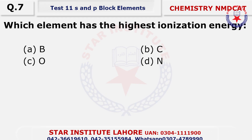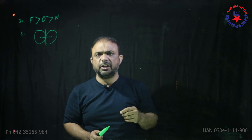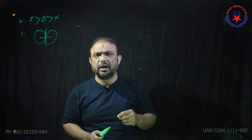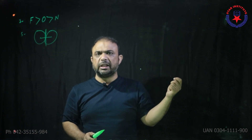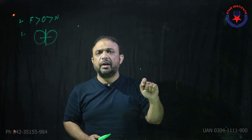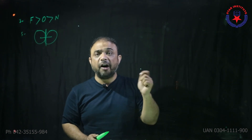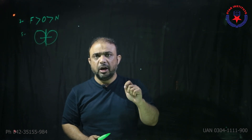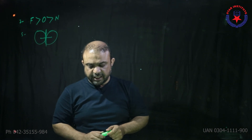Question number 7: Which metal has the highest ionization energy? The ionization energy increases from left to right. If you see the ionization energy graph, nitrogen's ionization energy is even more than oxygen — because nitrogen possesses half-filled p orbitals. Half-filled p orbitals make it extraordinarily stable. So the choice is D.